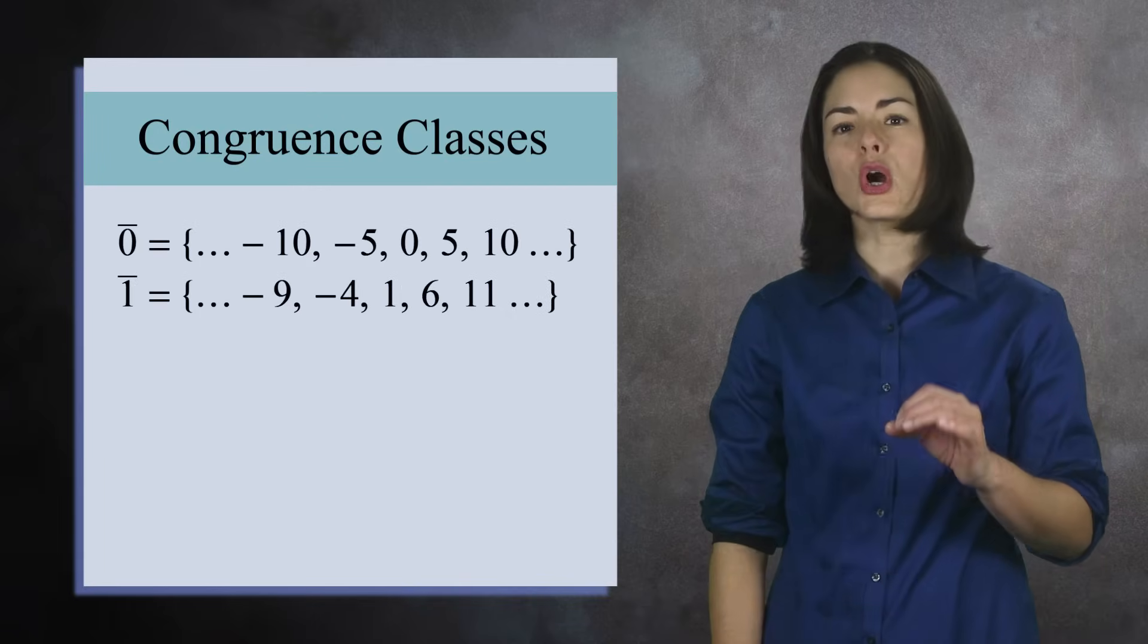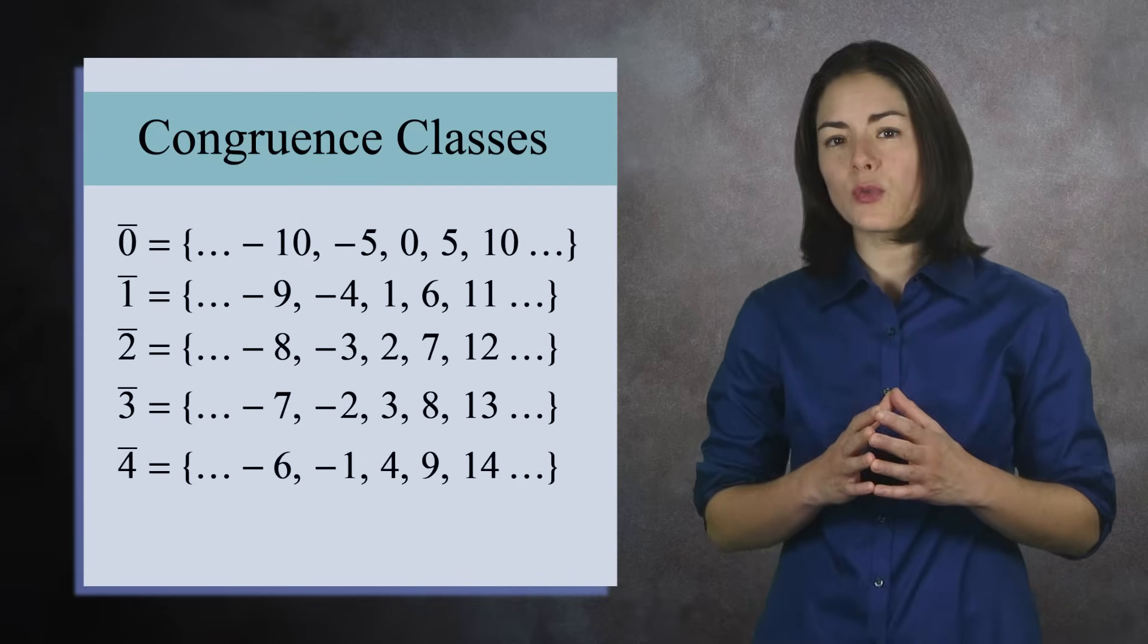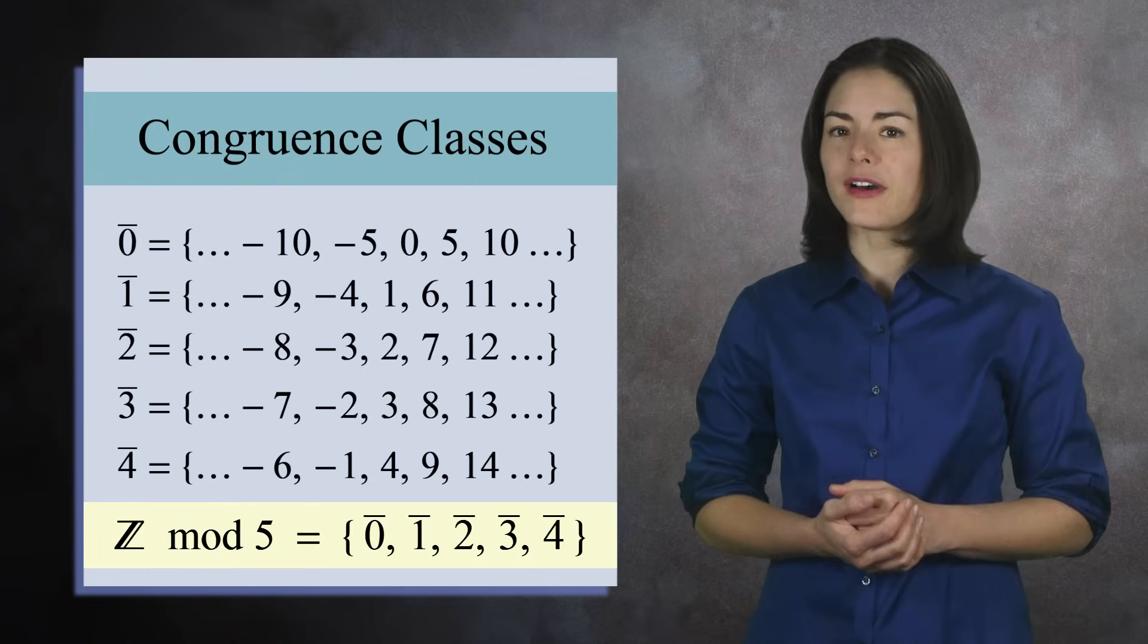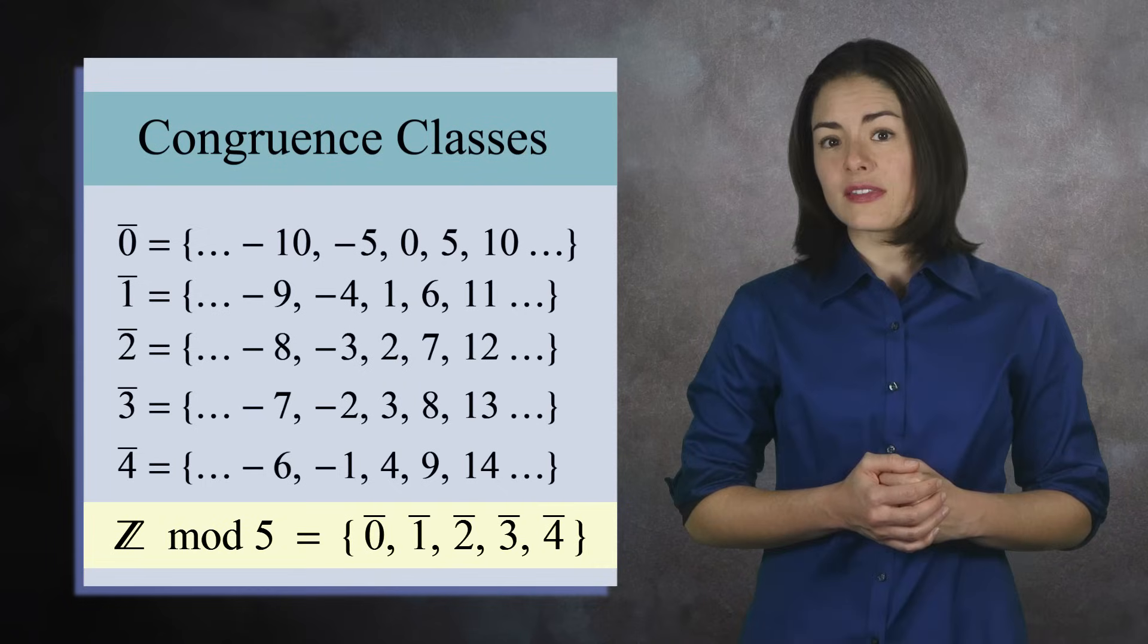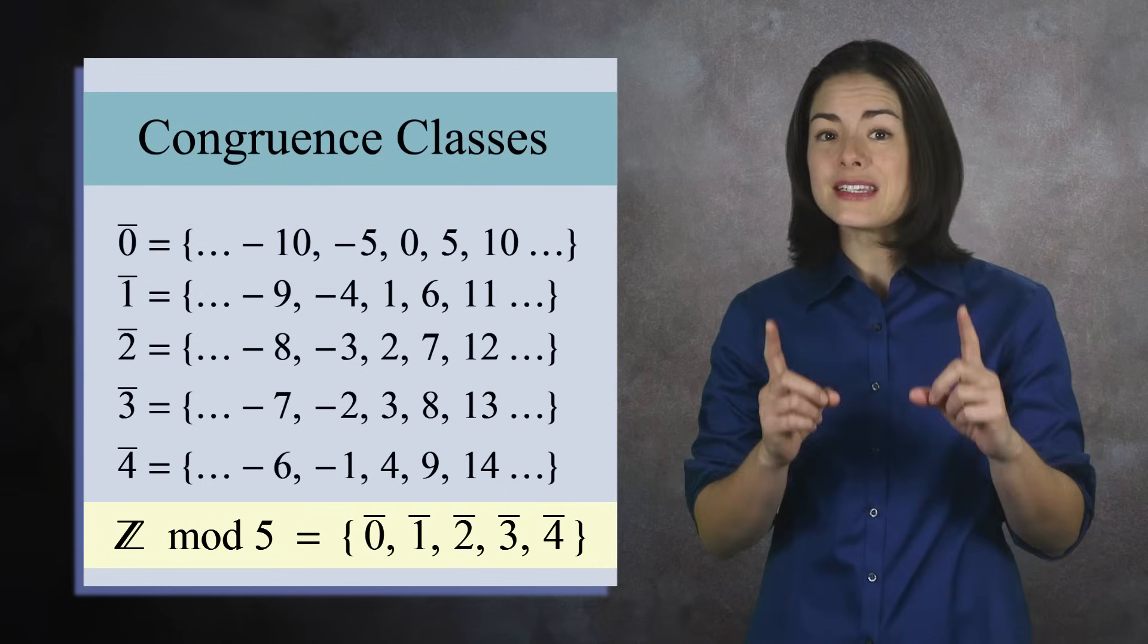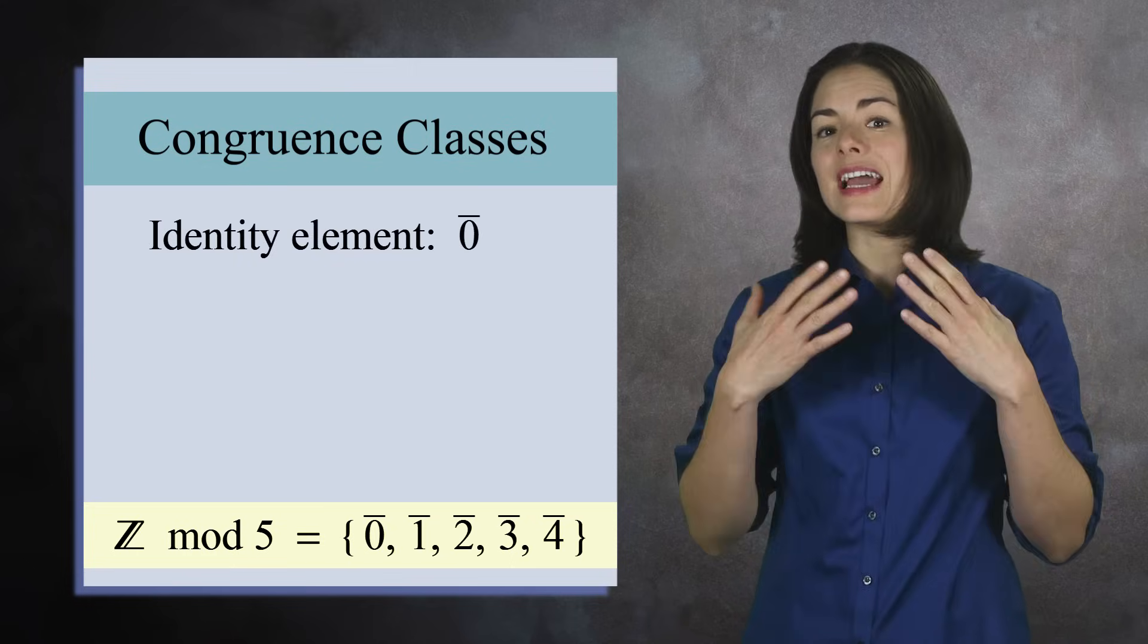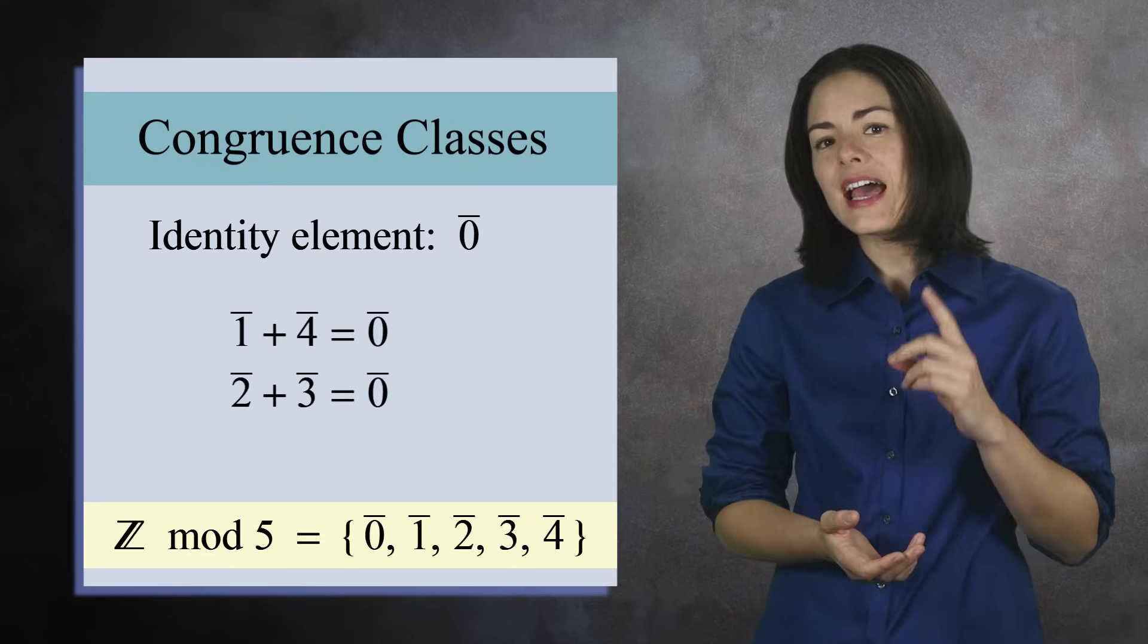These 5 sets are called congruence classes. And if we treat the sets as if they were numbers, then we have a group with 5 elements, the integers mod 5. It's very good practice to check that these 5 metanumbers do indeed form a group under addition. For instance, the set of the multiples of 5 act as the identity element, and each set has an inverse.